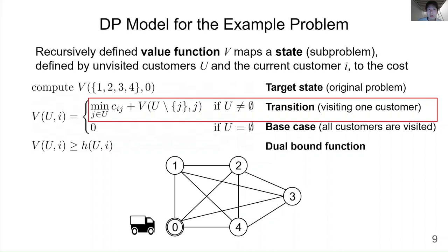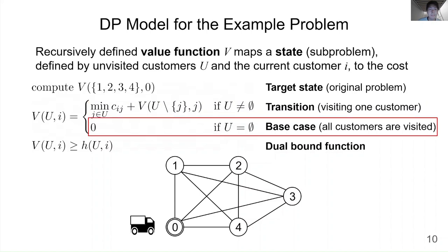To compute the optimal cost of state (u, i), we take the minimum over all customers j included in the set of unvisited customers u. When all customers are visited, the cost of the state is defined non-recursively to be 0. This is called a base case. By solving this recursive equation, we can compute the value function v.